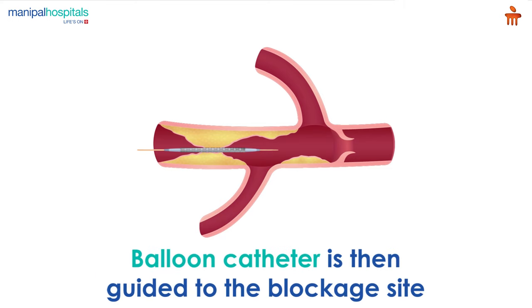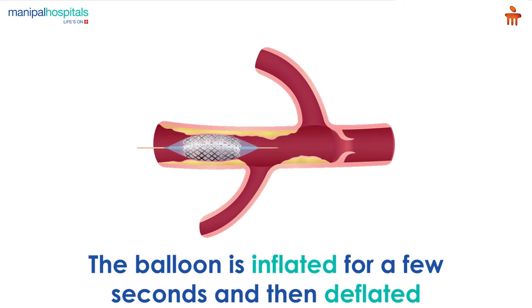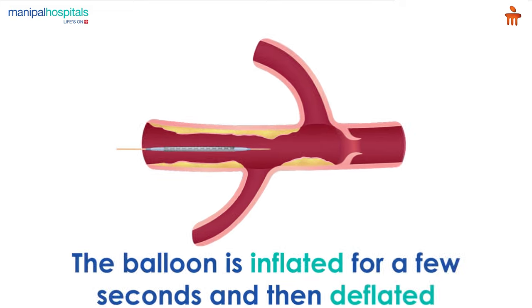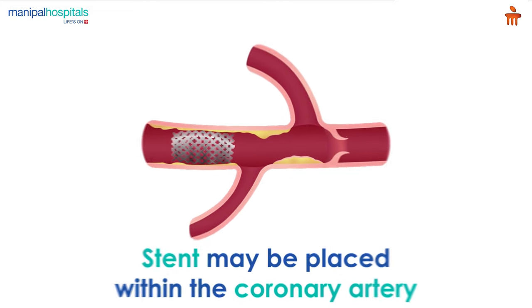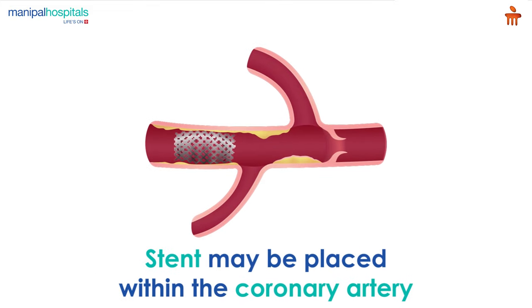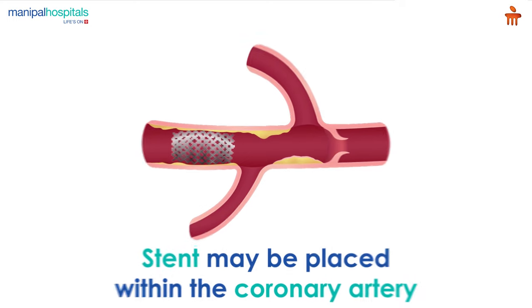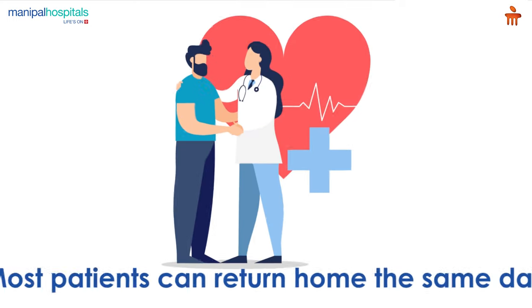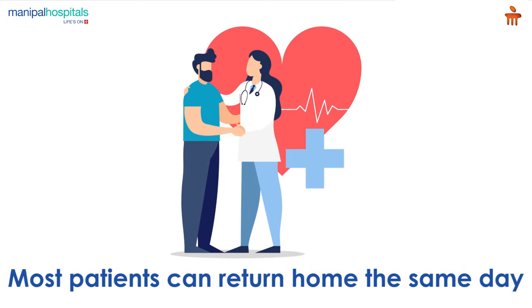A balloon catheter is then guided to the blockage site. The balloon is inflated for a few seconds to compress the blockage and then deflated. A device called a stent may be placed within the coronary artery to keep the vessel open.